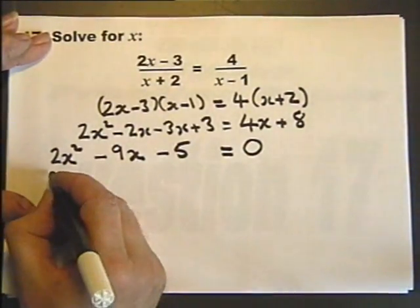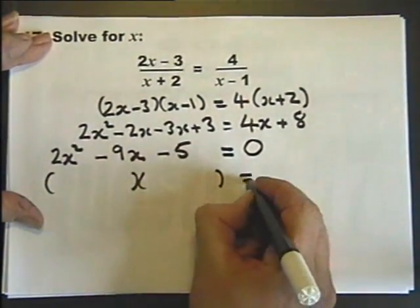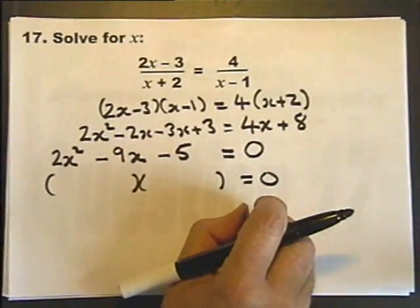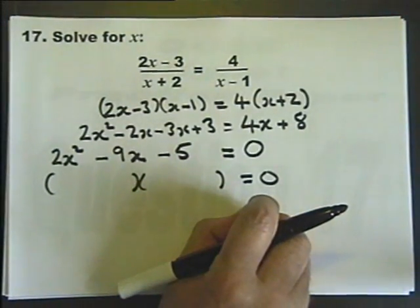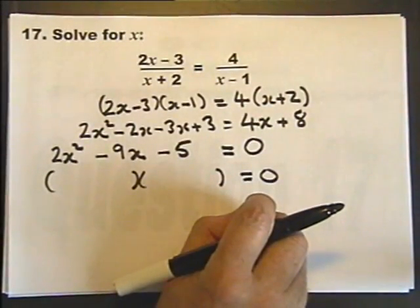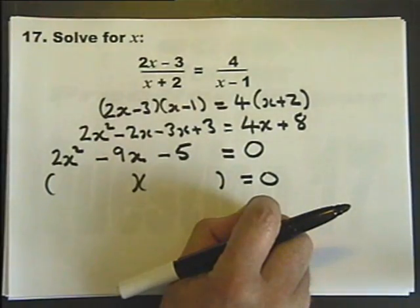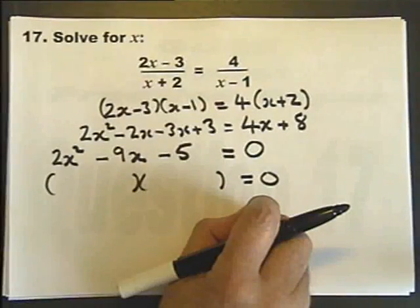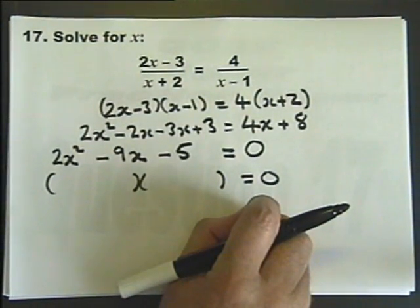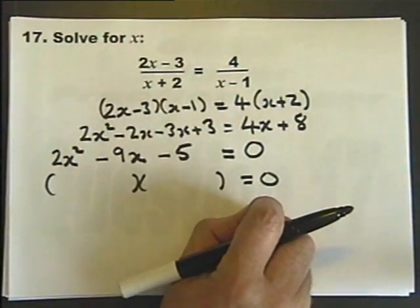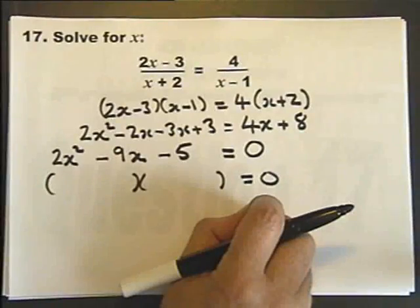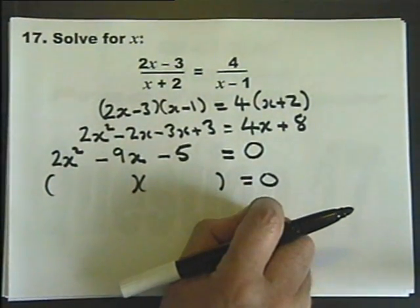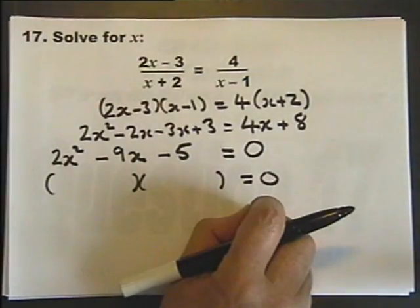Next we try to factorize it. If the question had said write your answer to two decimal places or three significant figures, the examiner would be giving you a hint that it won't factorize and you'd have to use the quadratic formula. But the examiner hasn't said that, so it may well factorize. Still doesn't have to.